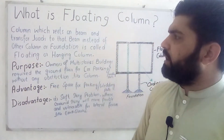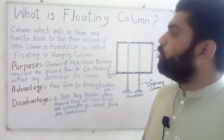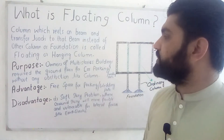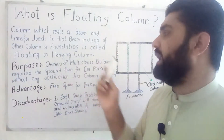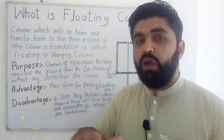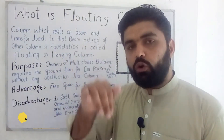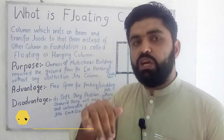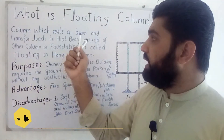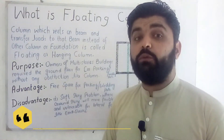What is a floating column? A floating column is a column which rests on a beam and transfers load to that beam, instead of resting on another column or a foundation. So this is a column which rests on a beam instead of any column or foundation, and transfers its load to that same beam.